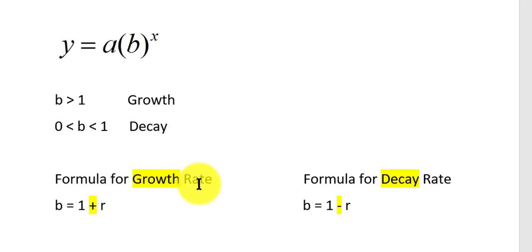And we have a growth rate, B equals 1 plus R. If we're talking about decay rate, B equals 1 minus R. And also, remember, the B would always be between 0 and 1 for decay. And B would be greater than 1 for growth.